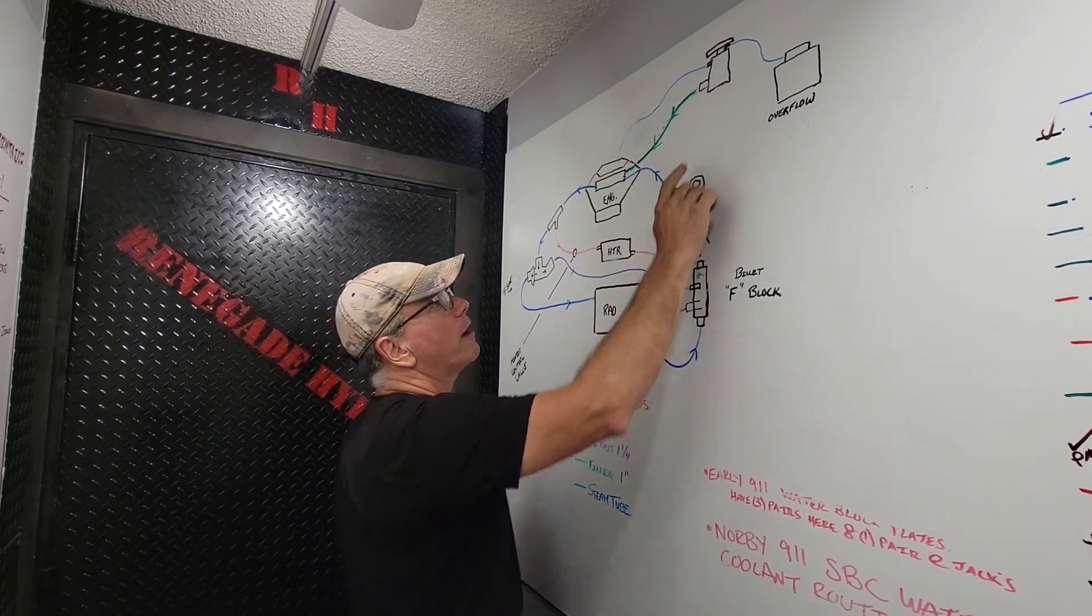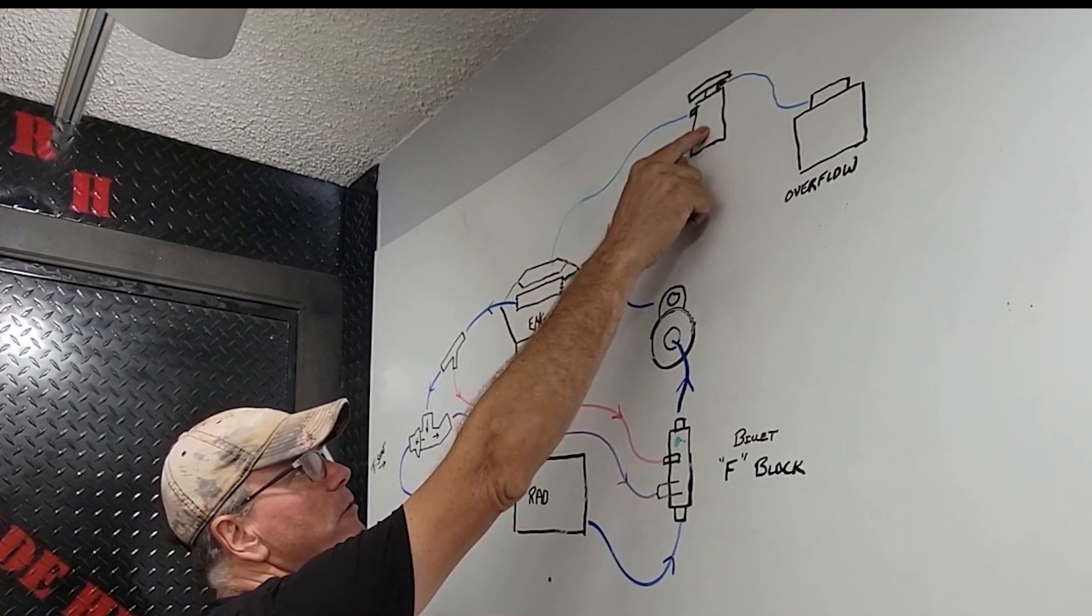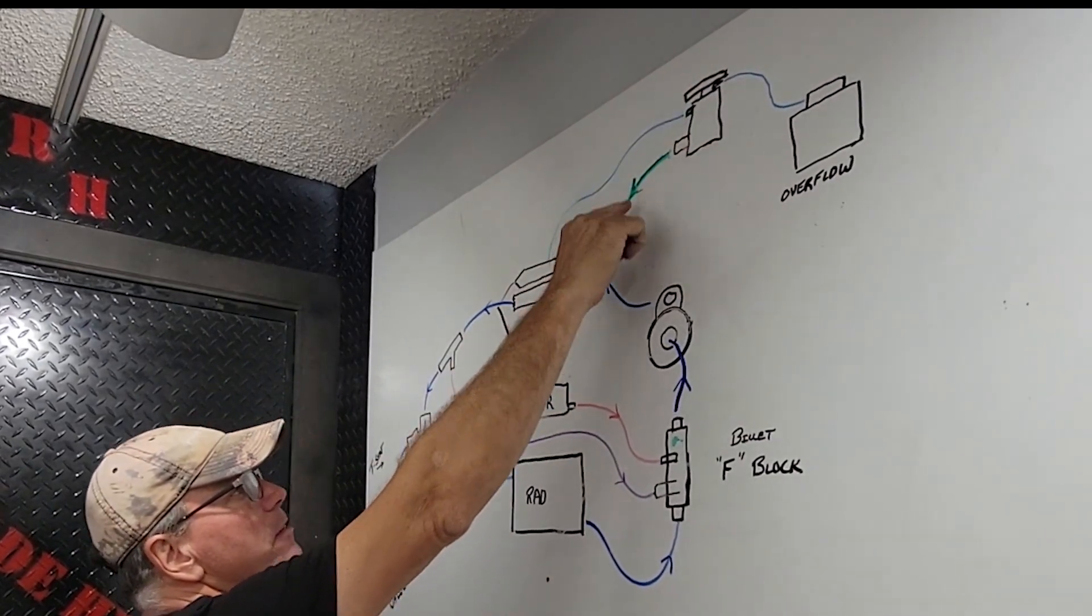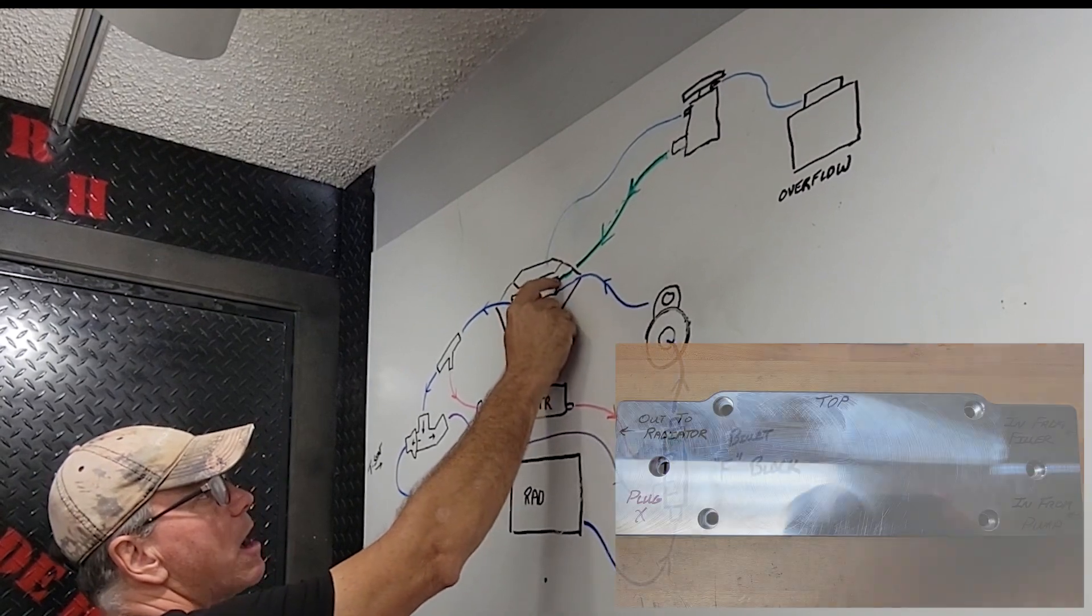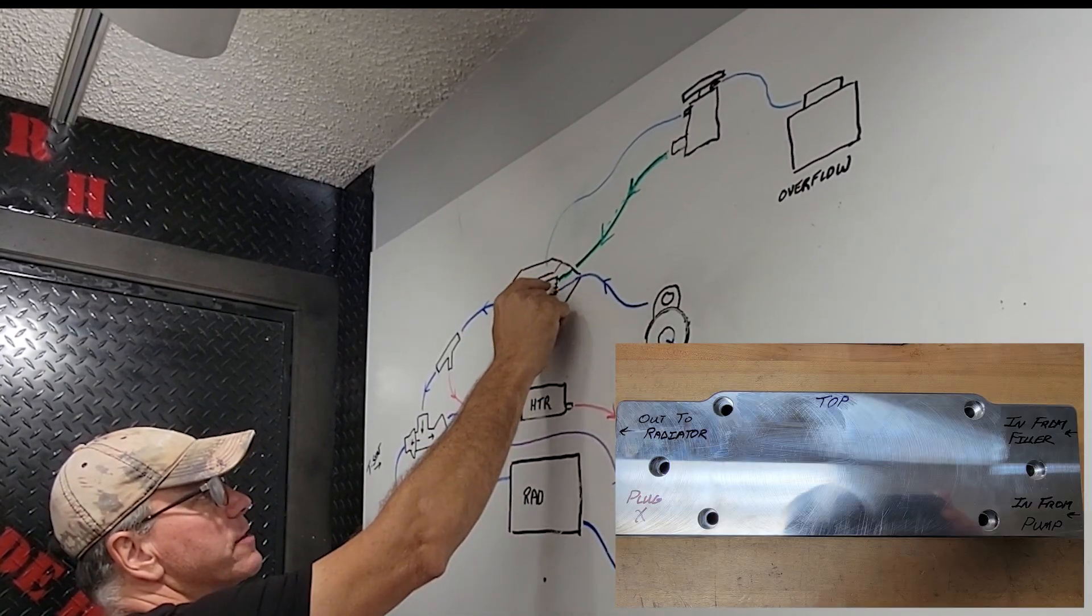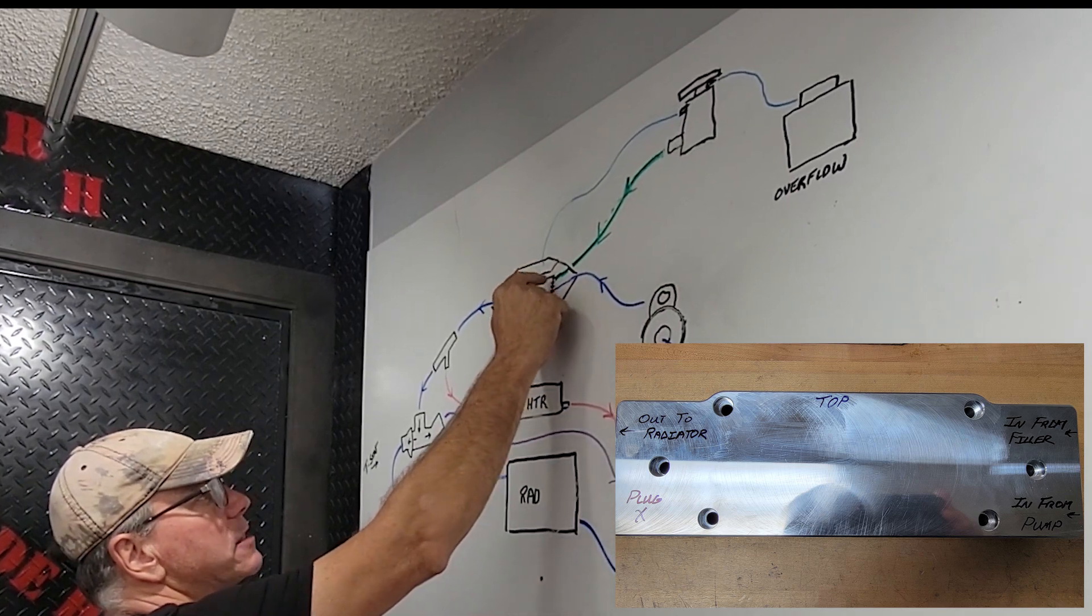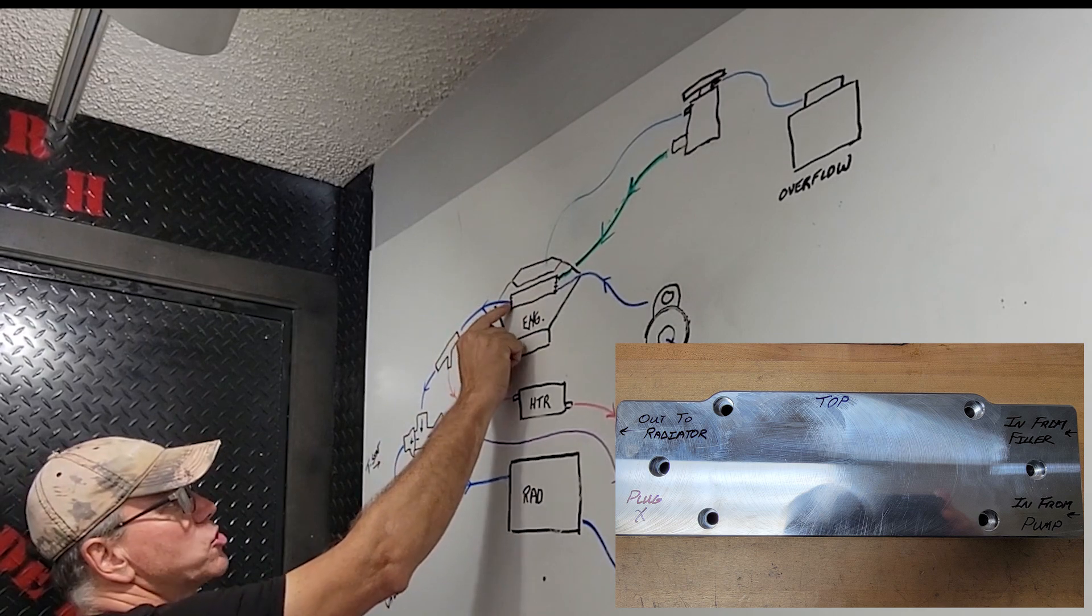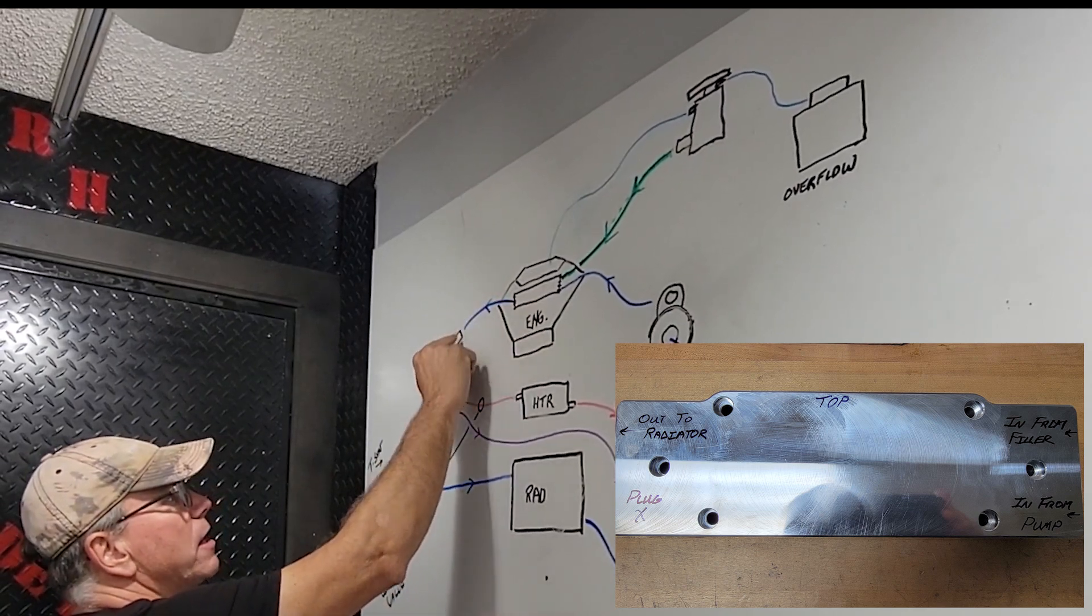Follow along by the flow of water. This is going to be our remote filler neck that goes up on the firewall. This is the highest point in the entire system. This feeds one inch into the top of the water manifold that goes on the front of the LS engine right here. So that's one inch right there. That's going to be the inlet.